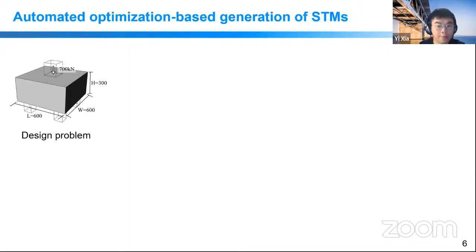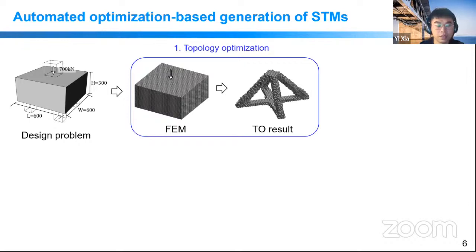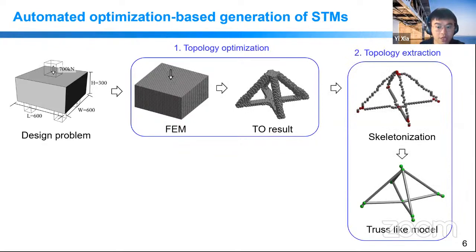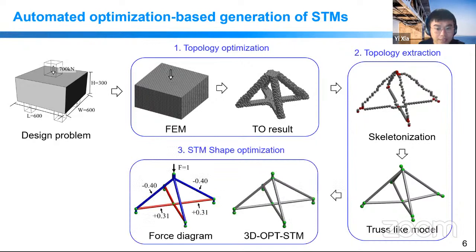To solve this problem, we propose an automatic generation method with three main steps. Using a pile cap as an example: first, topology optimization using the classical SIMP method with compliance minimization to obtain the optimized material distribution; second, topology extraction — from the optimized solid, truss-like models are obtained automatically; and third, shape optimization of the obtained truss-like model to obtain the final strut-and-tie model. The forces and layout of this model are then used to design the D-region.